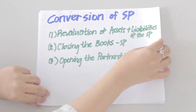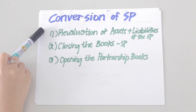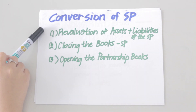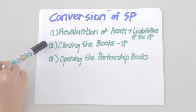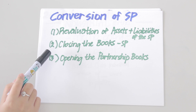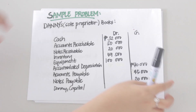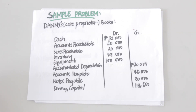Next, we will discuss the entries when a sole proprietor forms a partnership with other individuals. This process is more complicated and involves three steps: first, the revaluation of assets and liabilities of the sole proprietorship; second, the closing of the books of the sole proprietorship; and third, recording the opening entries for the partnership books.